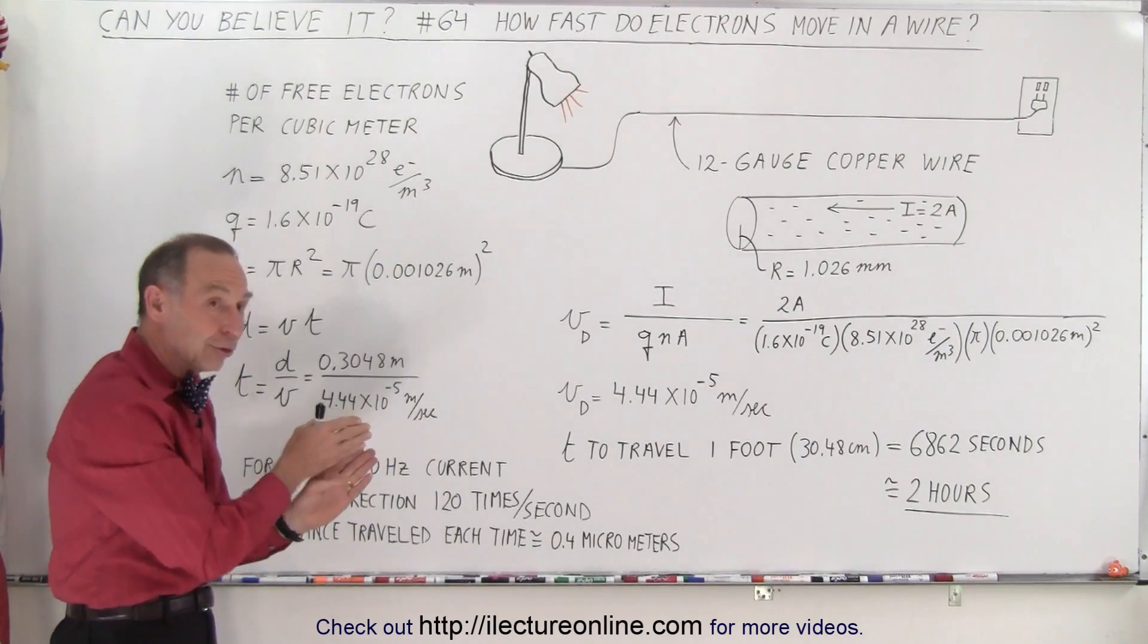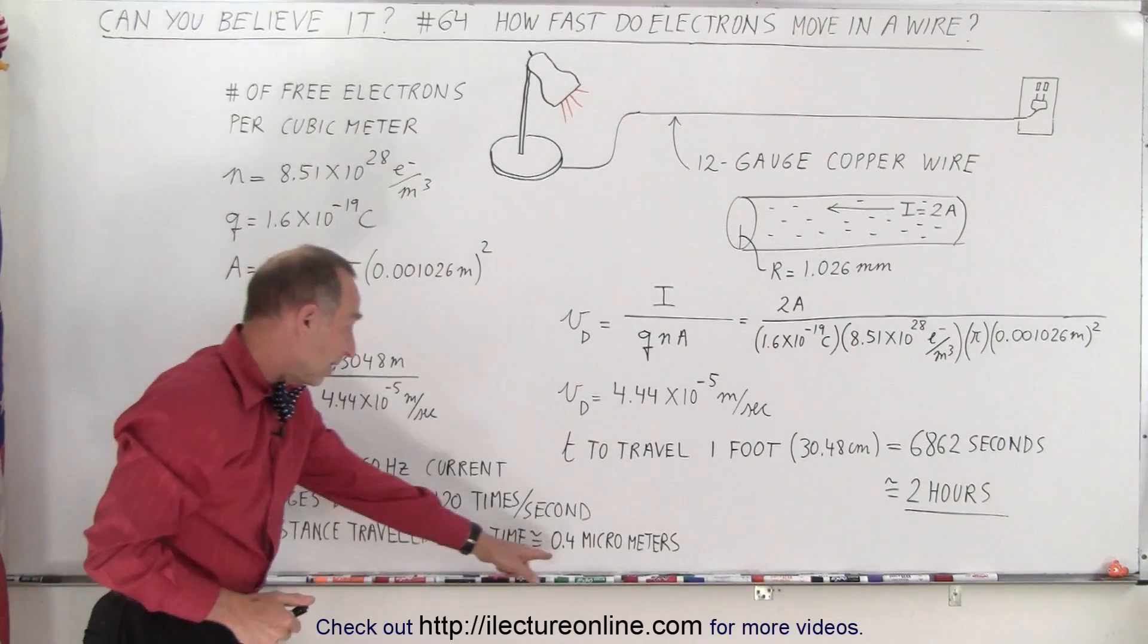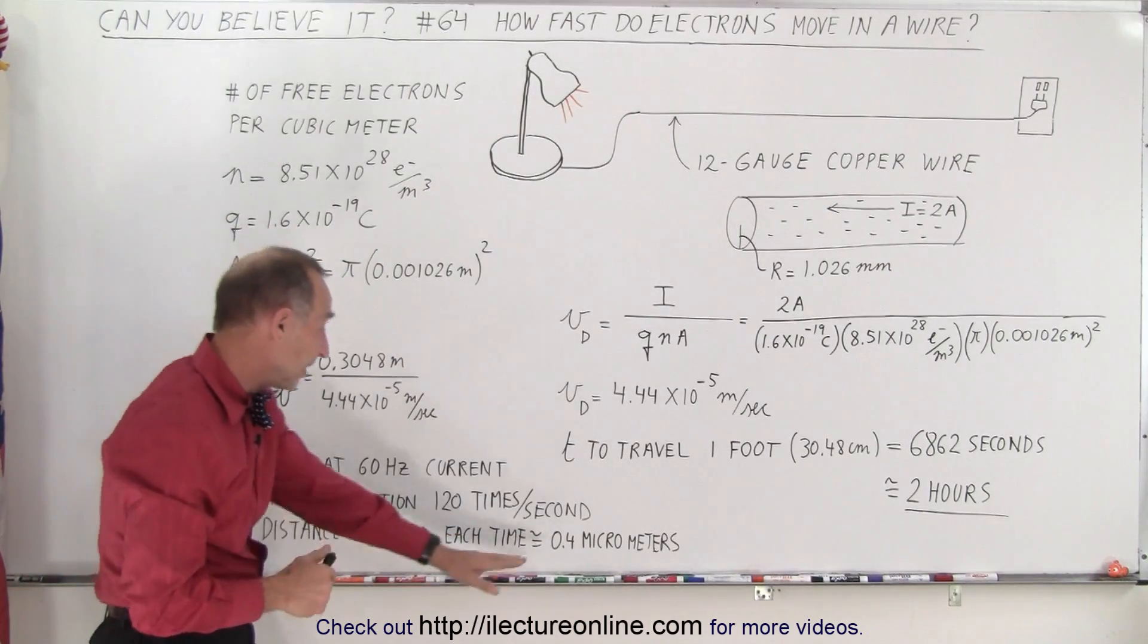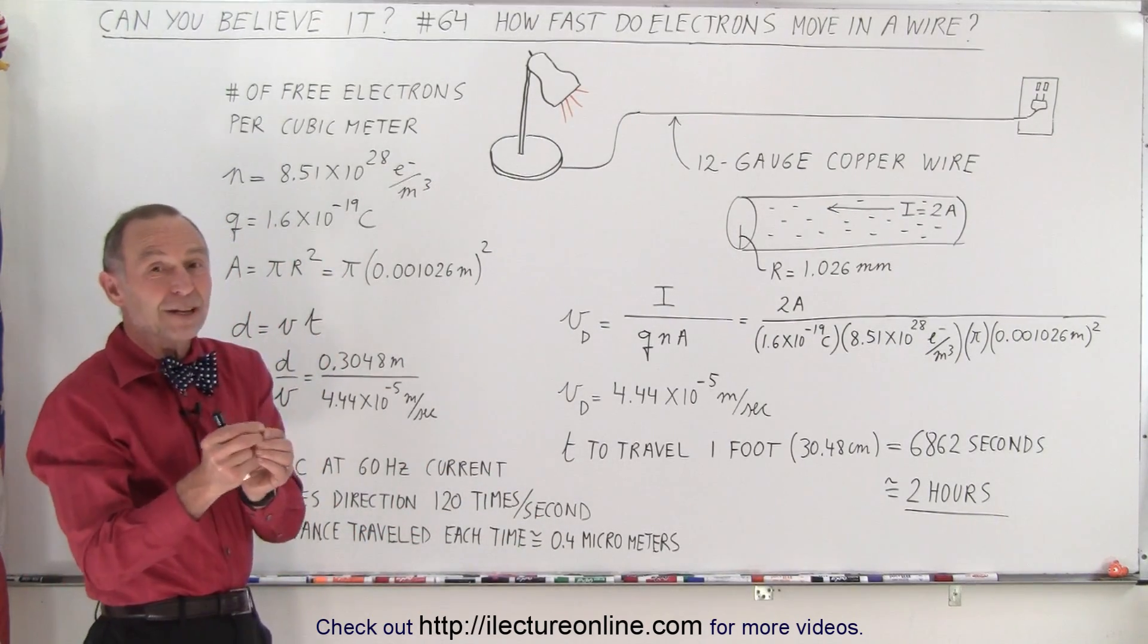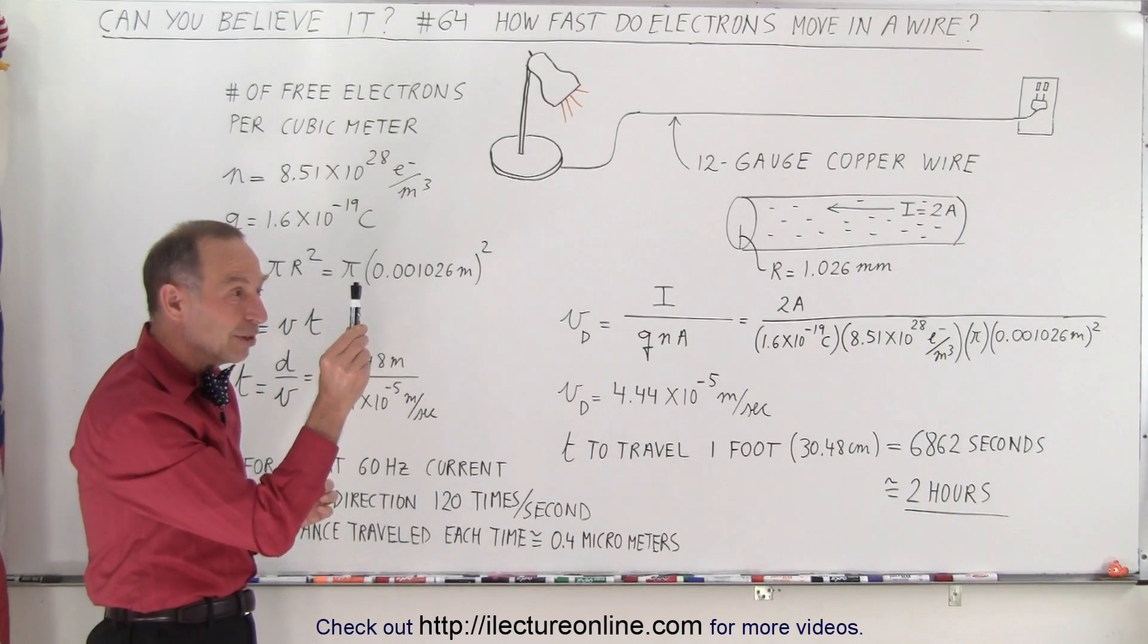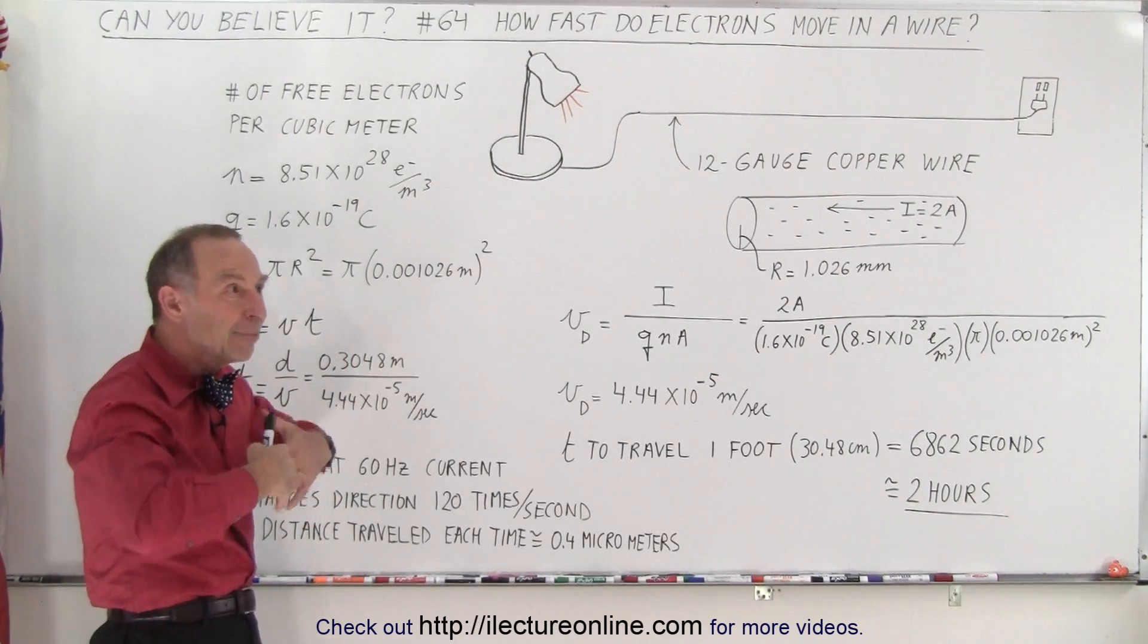In each direction before it turns back and goes the other direction, electrons will travel less than a micrometer, less than half a micrometer. And a micrometer is 1/1000th of a millimeter. So the electrons barely move distance-wise, and yet it powers everything.